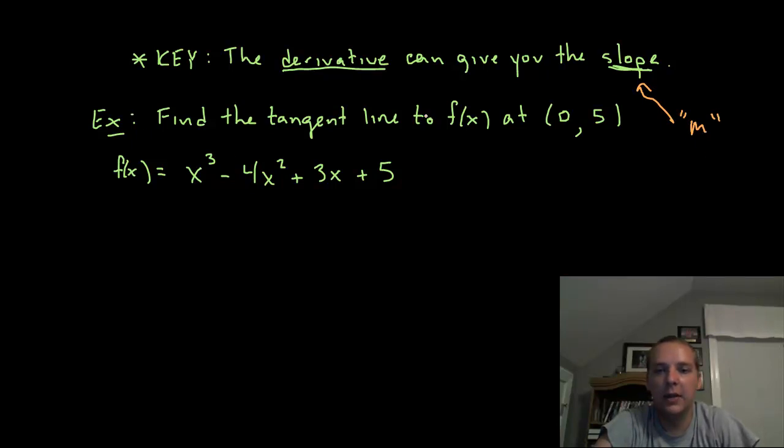So here we go: find the tangent line to f(x) at the point (0,5). Now this is kind of an easier example to begin with because I made sure that this extra point that's given is the y-intercept: 0,5, x is 0 so y would be 5. It would be slightly more difficult if it was 2,5 or 4,5 or something like that. But anyways let's look for our m first, so we'll differentiate the function. We get 3x² minus 8x plus 3, and the 5 goes away because it's a constant.